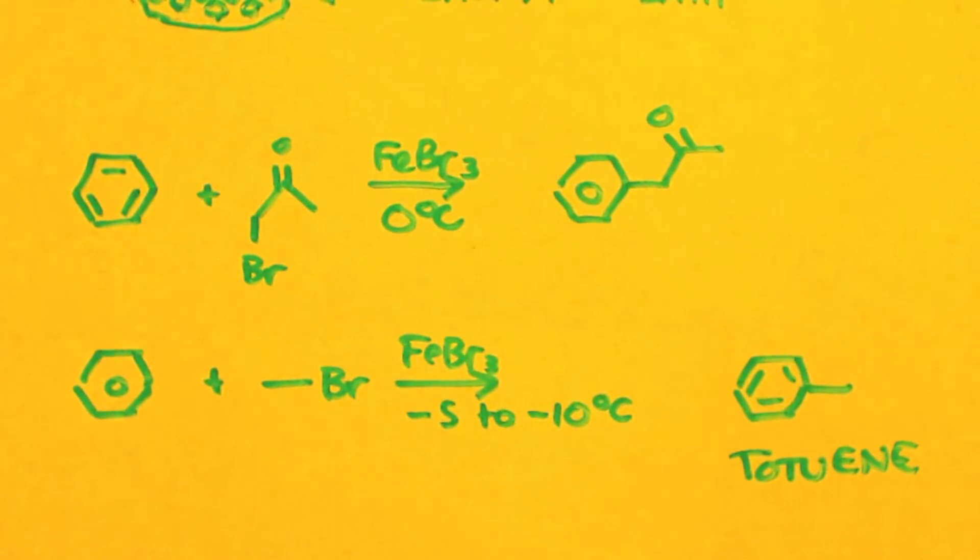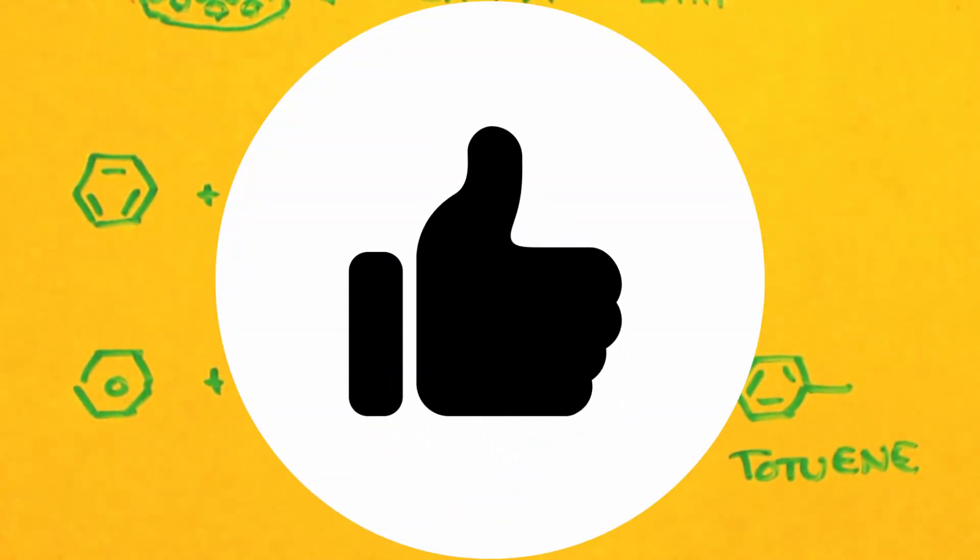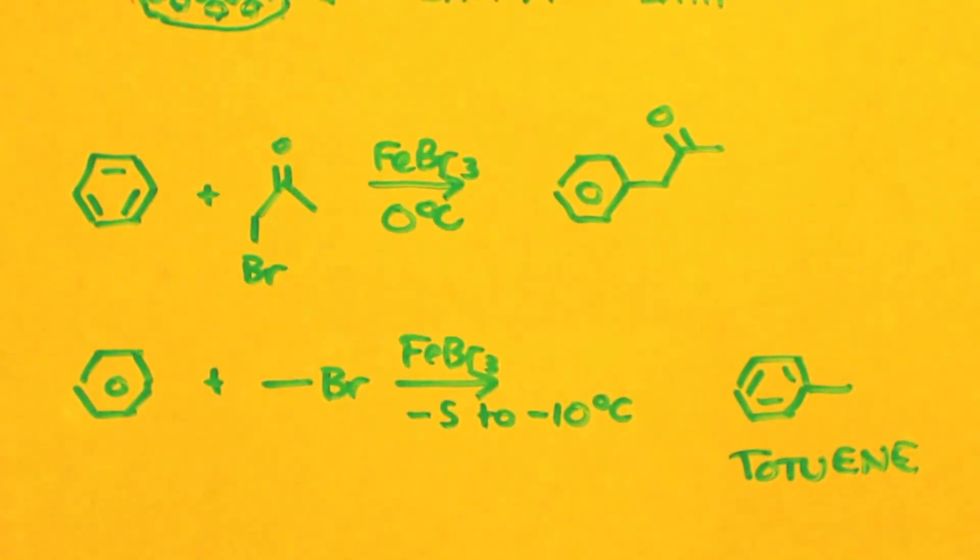Now the top equation is what we've been talking about during this video. The bottom equation is the same reaction, but instead of using bromoacetone, you use methyl bromide. And because methyl bromide has a lower boiling point temperature, it has a pretty low, it's a gas at room temperature. I think it is. But anyways, since it has such a low boiling point, you might want to make the reaction be at minus 5 to minus 10 C. I'd have to look up the boiling point. But you probably want it lower than zero degrees Celsius. And you would end up making toluene or methyl benzene.